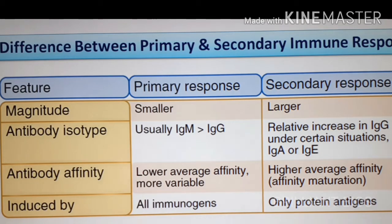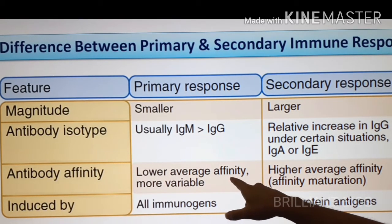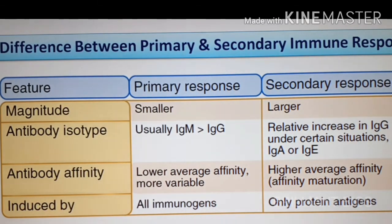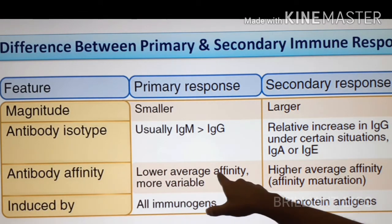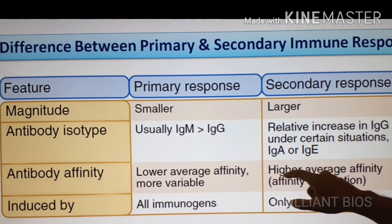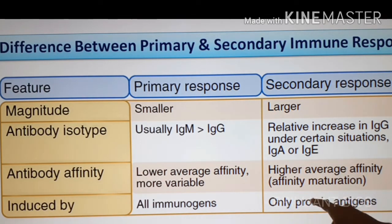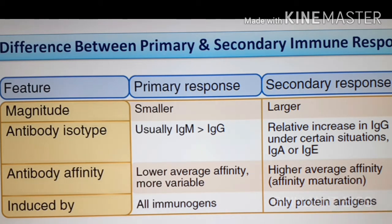Another important difference is antibody affinity — affinity means the strength of interaction with antigen. In primary immune response, there is lower average affinity and more variable binding. In secondary immune response, the affinity is higher. A process occurs in B cells called affinity maturation, which will be explained in more detail in another class.